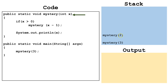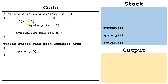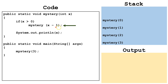We pass the argument 2 to the parameter x. We check: is 2 greater than 0? It is. So we call mystery(x minus 1) and place mystery(1) on the stack. Again, we are going to skip the remaining code for now and come back to it when we complete this call. We pass the argument 1 to the parameter x. 1 is greater than 0, so we call mystery(x minus 1), which is mystery(0), and place it on the stack.